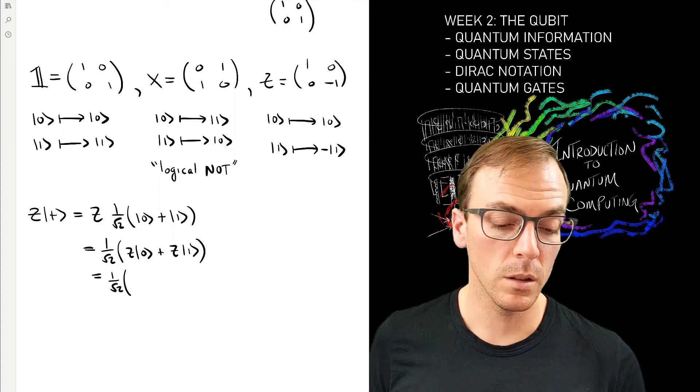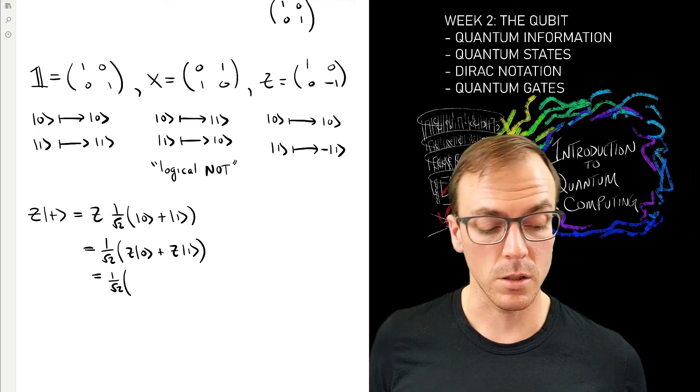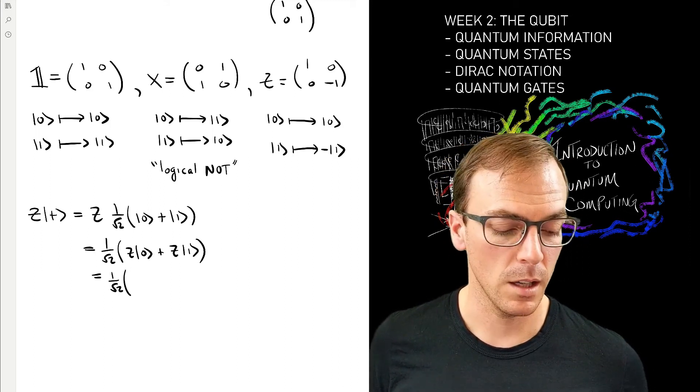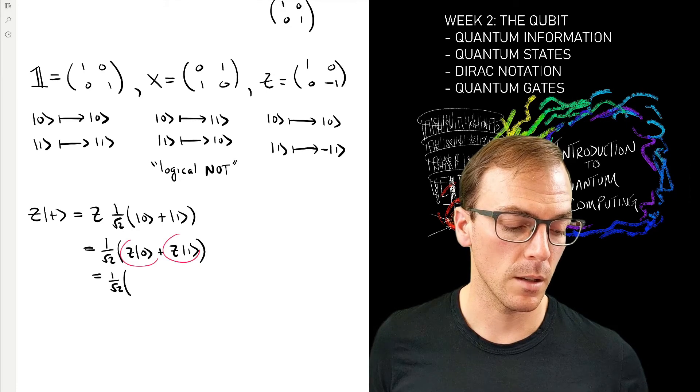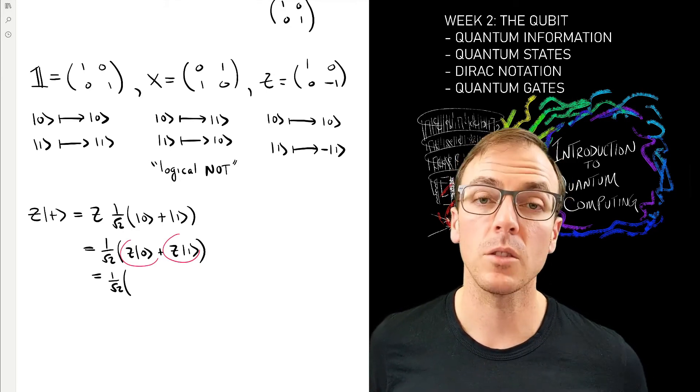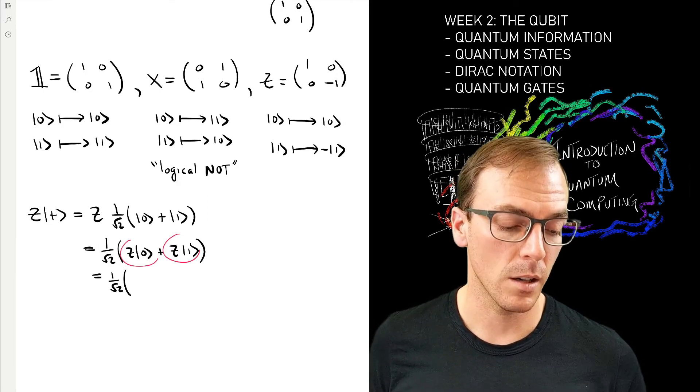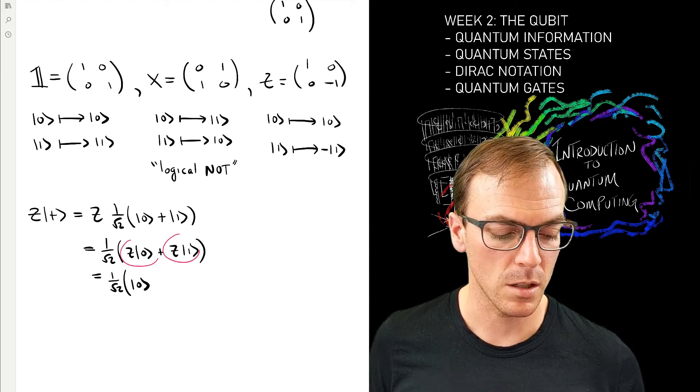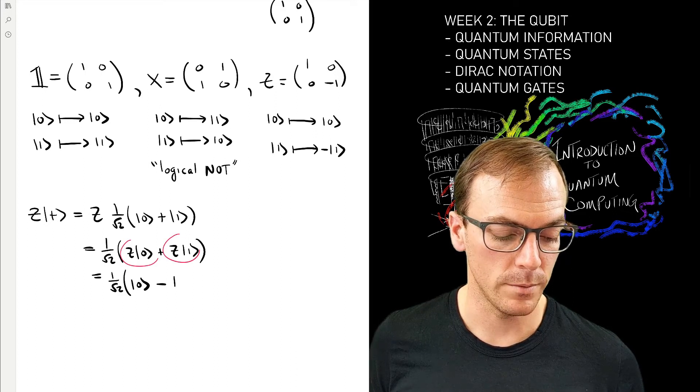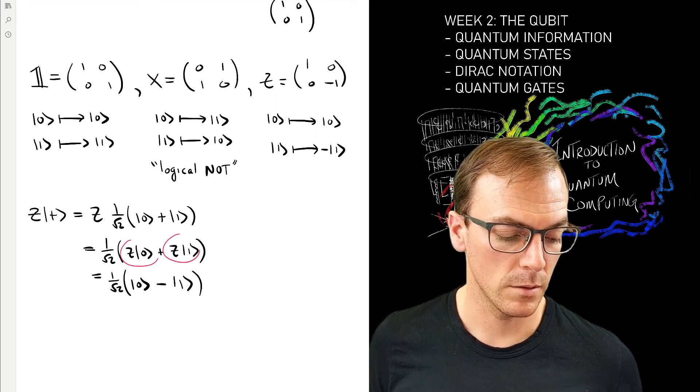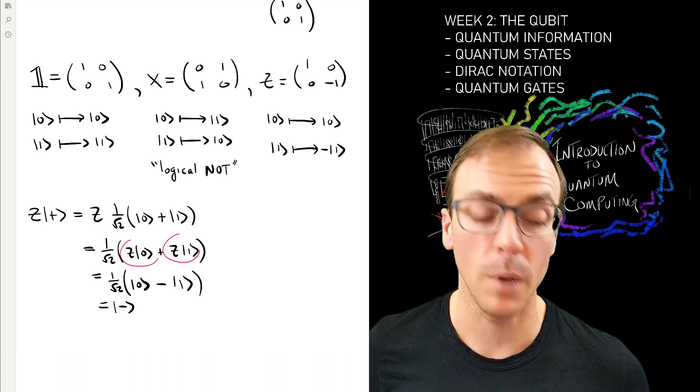Then I apply this rule. This is the other nice thing about Dirac notation: I've just applied linearity, and if I know how Z acts on each of the basis elements, then I can, without ever writing down matrices, solve this particular computation. I can look back and see that the Z hasn't changed the zero state but has put a minus on the one state. So in fact, what Z has done to the plus state is take it to the minus state.